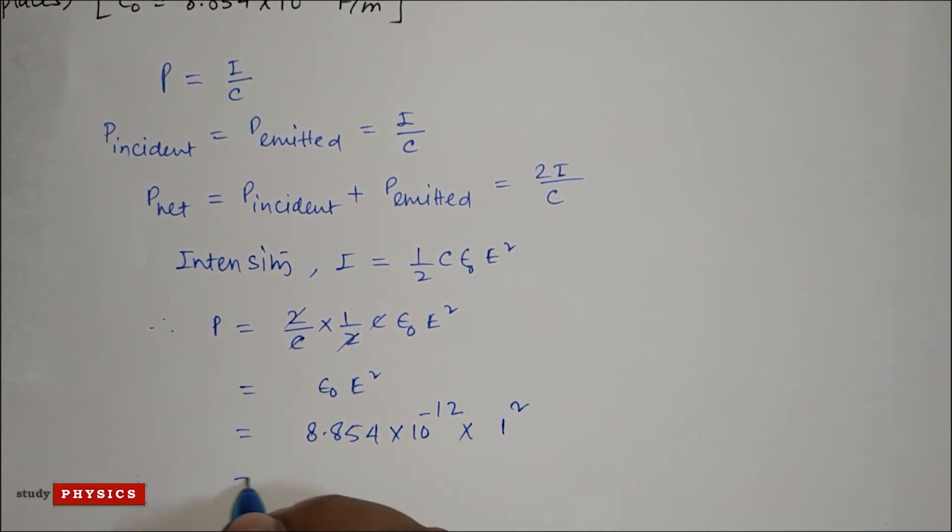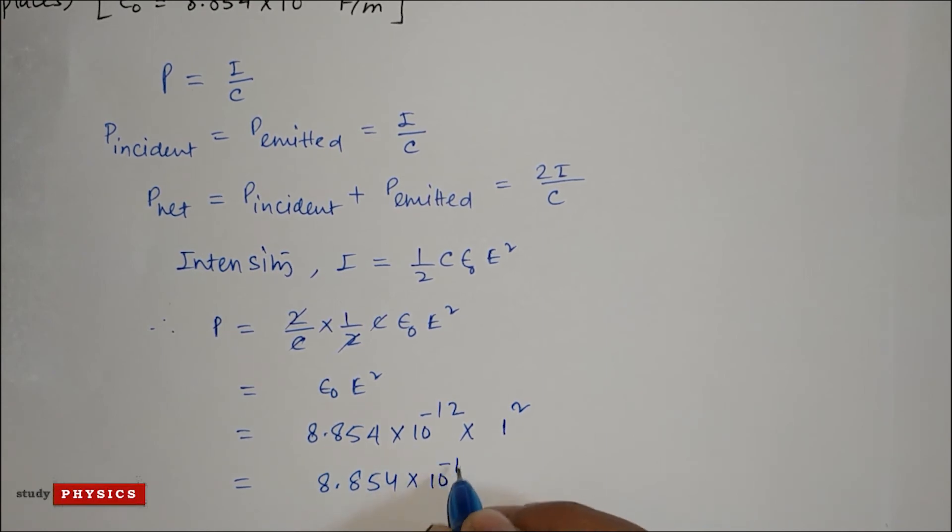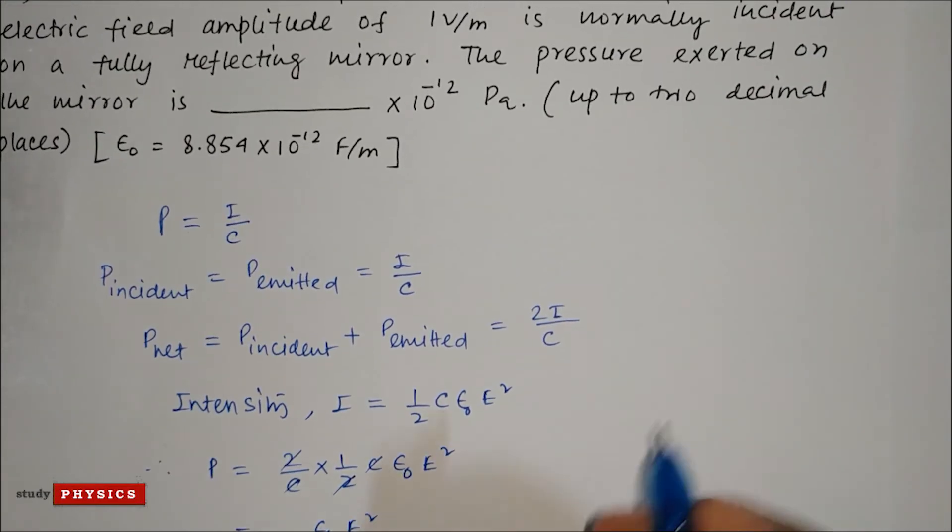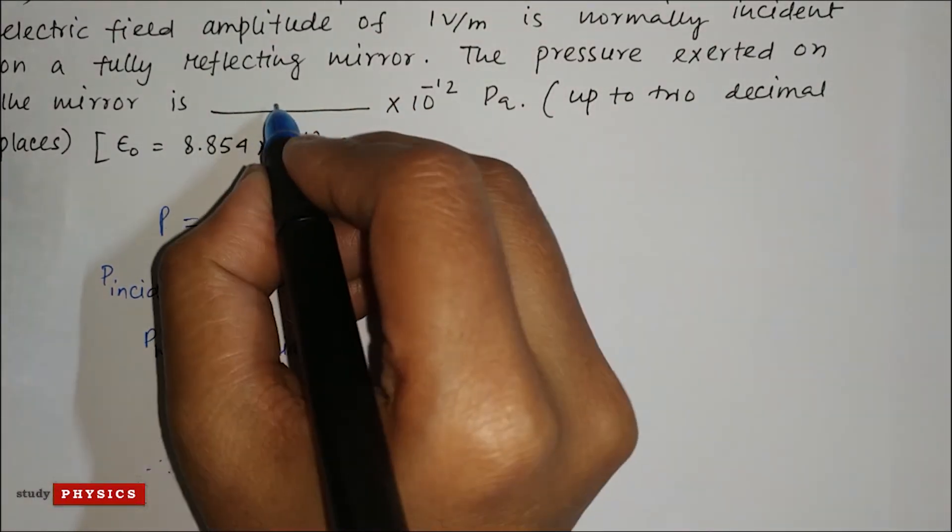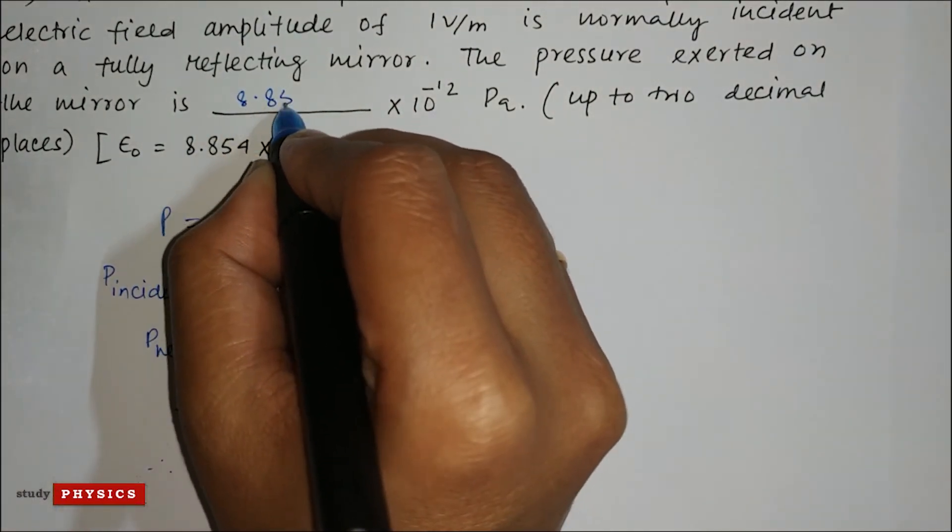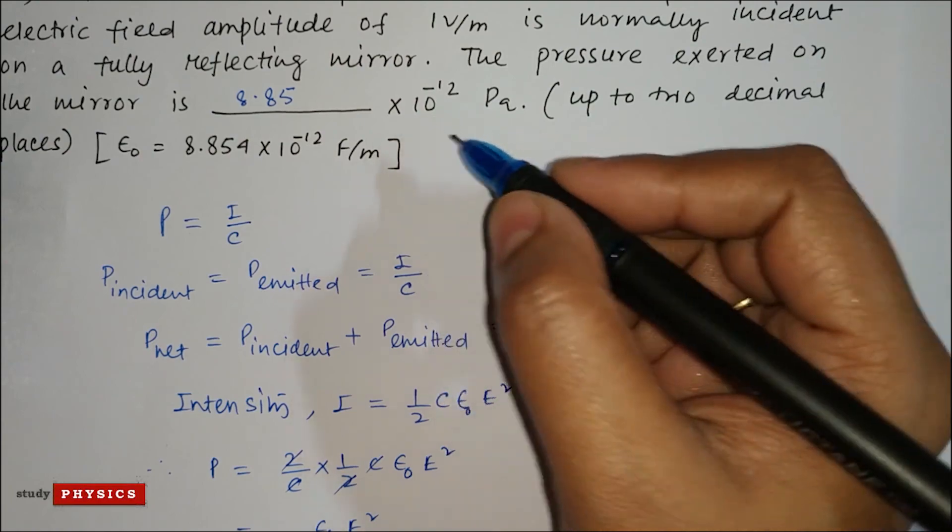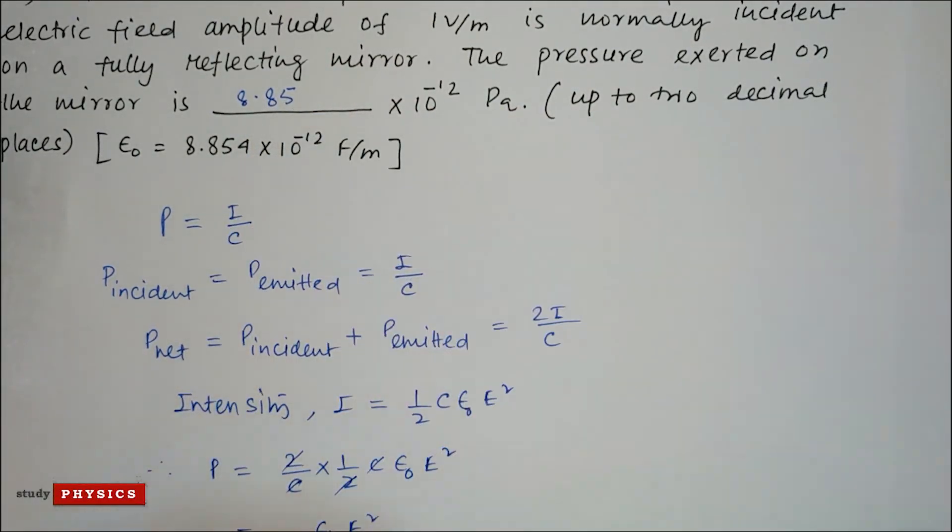Which is 8.854 times 10 to the power minus 12. So the answer is up to two decimal places: 8.854 times 10 to the power minus 12.